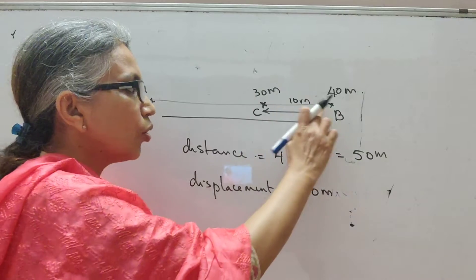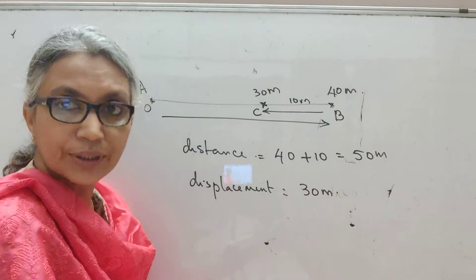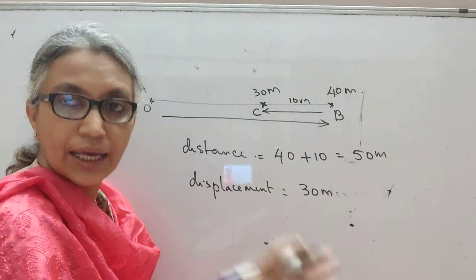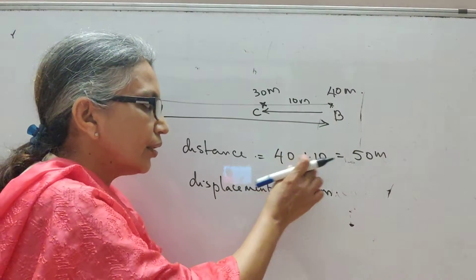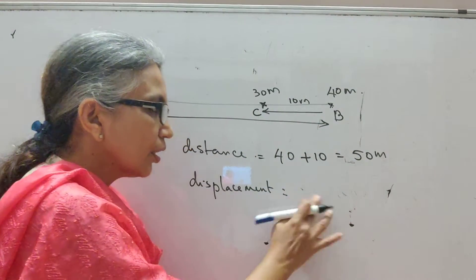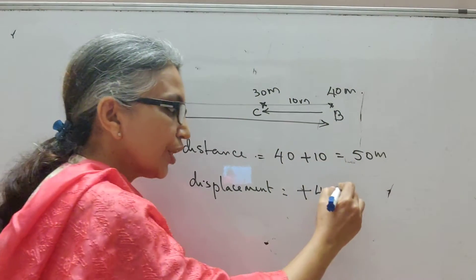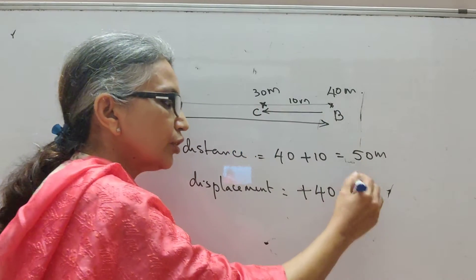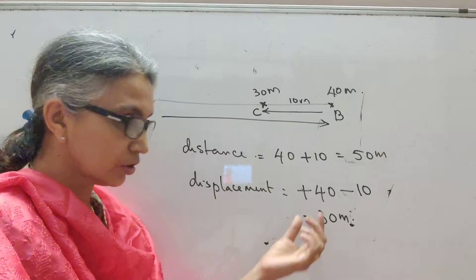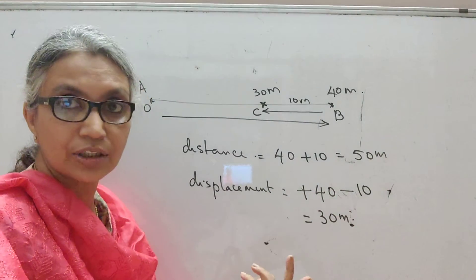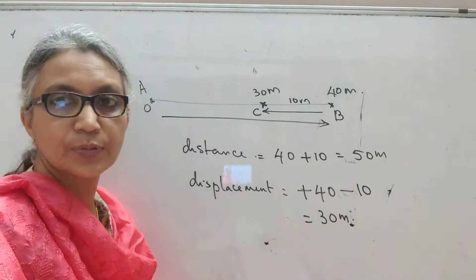How did we get 50 meters for distance? We considered only the magnitude, not the direction. He traveled to the right and then to the left, but we ignored the direction and simply added the magnitudes: 40 plus 10 equals 50 meters. Since we consider only the magnitude, distance is a scalar quantity. For displacement, when he traveled to the right we take it as plus 40, and when he travels to the left we take it as minus 10, giving us 30 meters. Because both magnitude and direction are considered, displacement is a vector quantity.